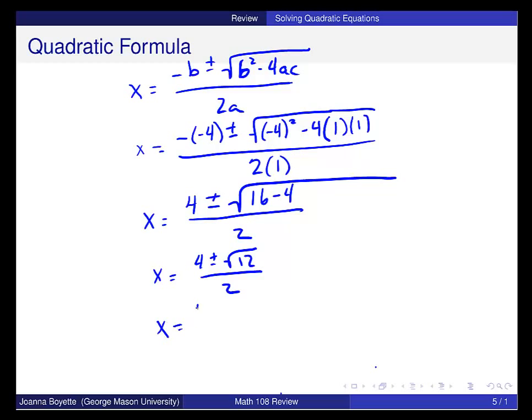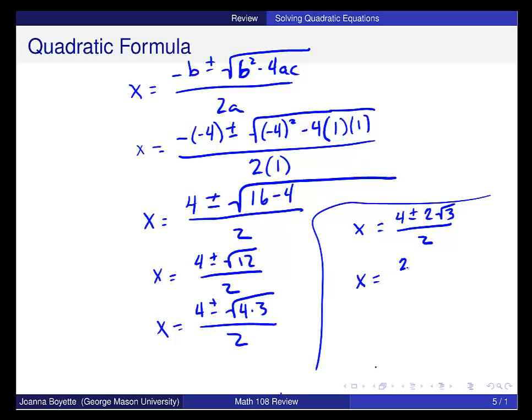12 is 4 times 3, so that will simplify. I want to come over here and get a little bit more space. Since I have a 4 and a 2 in the numerator and a 2 in the denominator, that will factor out. So I get 2 factored out of here as a greatest common factor. And then you can cancel. So in this problem, the final answer should be x is equal to 2 plus or minus the square root of 3.